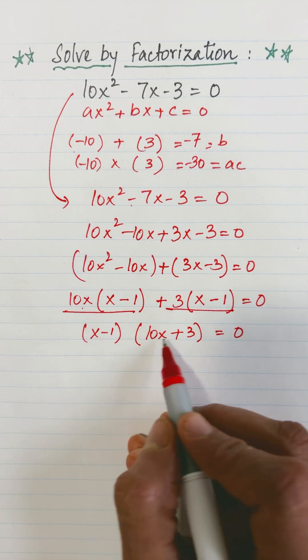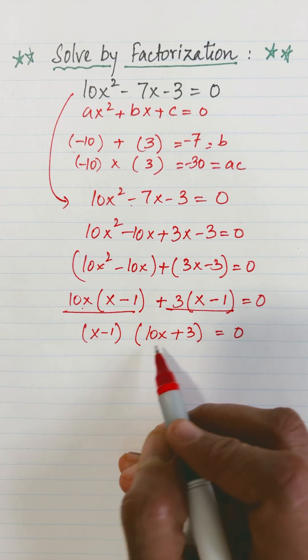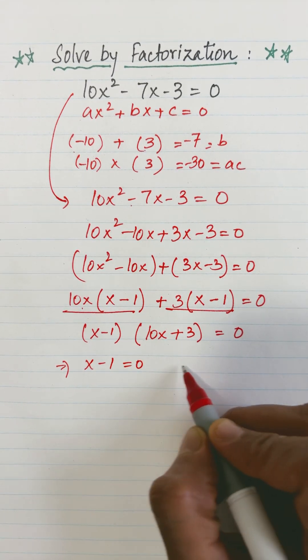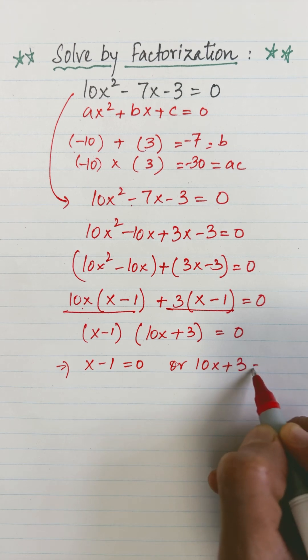By null factor law, if the product of two terms is 0, then either of them must be equal to 0. So it gives me either x - 1 = 0 or 10x + 3 = 0.